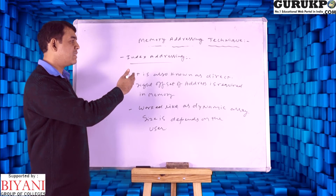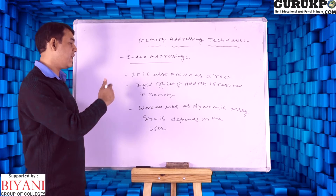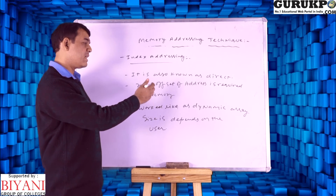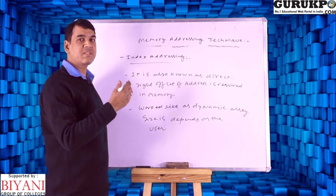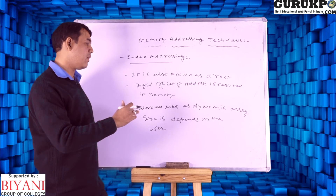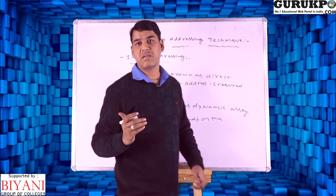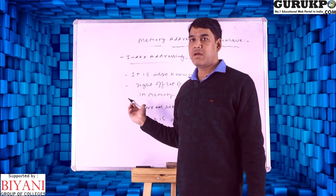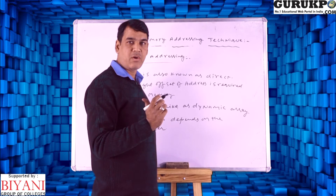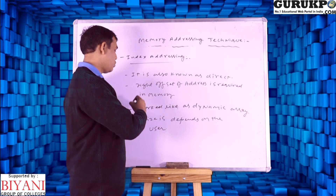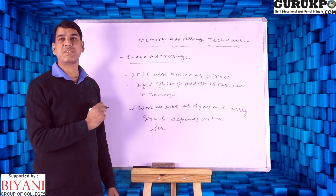Index addressing is also known as direct addressing. An offset of the address is required in memory for index addressing. Index addressing works like a dynamic array — the size is defined by the user depending on their requirement, so memory size can be more or less based on the particular user's need.